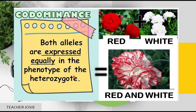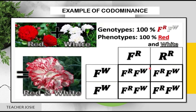The second non-Mendelian pattern of inheritance is codominance, where both alleles are expressed equally in the phenotype of the heterozygote. For example, a red flower crossed with a white flower results in a red and white flower — both appearances expressed equally. Using a Punnett square, a red flower with genotype FRFW crossed with a white flower FWFW gives 100% FRFW, so the phenotype is 100% red and white.